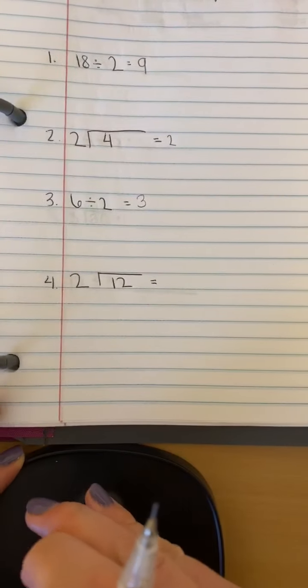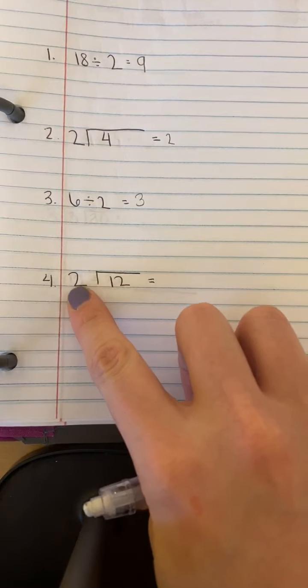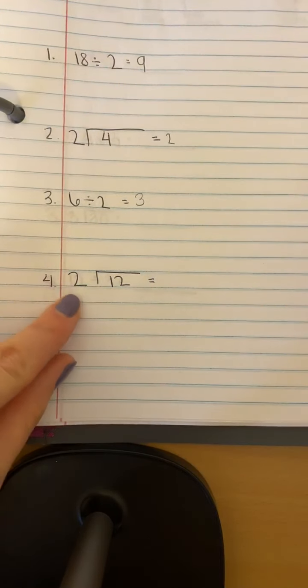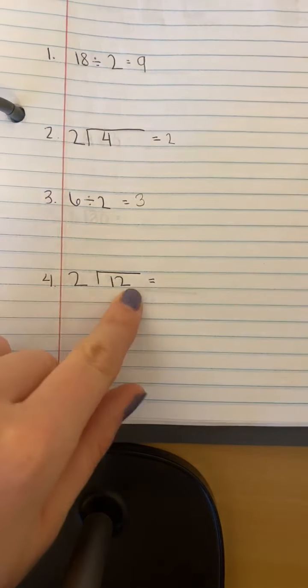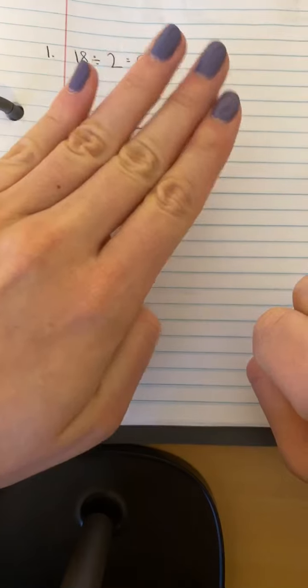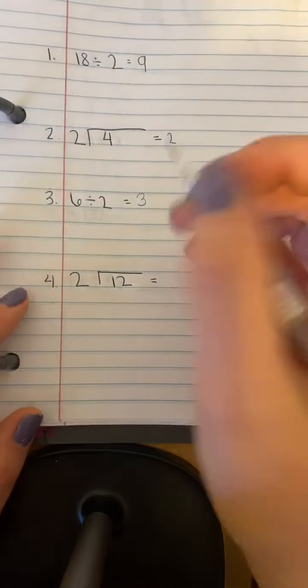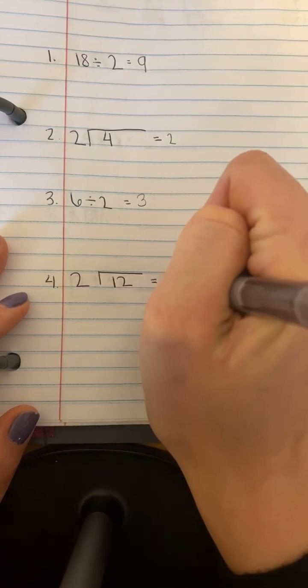And our last one that we're going to go over today. Here is my total, here is what I'm skip counting by. So I'm going to skip count by my twos and stop when I get to twelve. So two, four, six, eight, ten, twelve. I used six fingers, so I'm going to write six here.